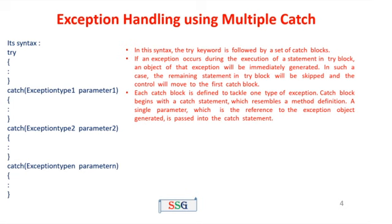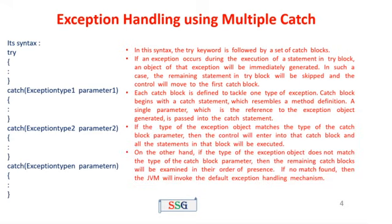If an exception occurs during execution of statements in the try block, an object of that exception is immediately generated — for example, ArithmeticException (n divided by 0), NumberFormatException, or ClassNotSupportedException. In such cases, the remaining statements in the try block are skipped and control moves to the first catch block. Each catch block is defined to tackle one type of exception. A single parameter — a reference to the exception object — is passed to the catch statement. If the type of the exception object matches the catch block parameter type, control enters that catch block and executes all its statements. If there is no match, the remaining catch blocks are examined in order. If no match is found, JVM invokes the default exception handling mechanism.